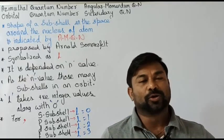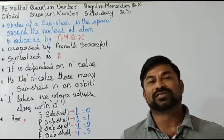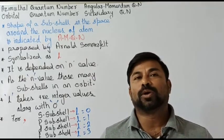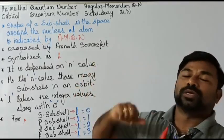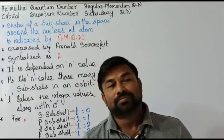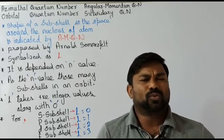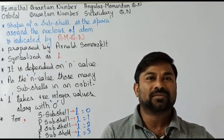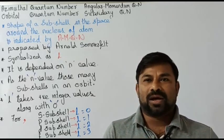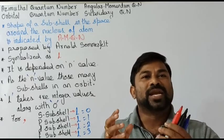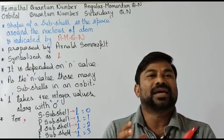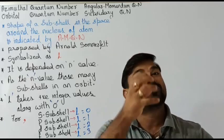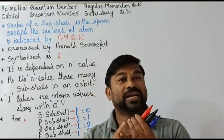Hello everyone, myself Maruti. Welcome to this physics video session. In this video I'm going to talk about the azimuthal quantum number. Before that, what is a quantum number? A quantum number is nothing but a figure or a number which tells about the state of an electron around the nucleus — where it is present.